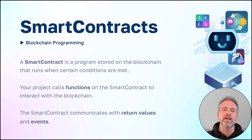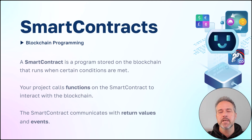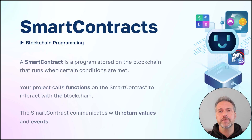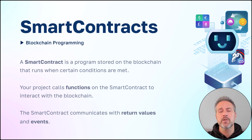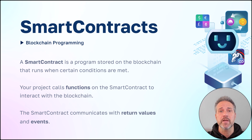A smart contract is a program that runs on the blockchain. It runs when certain conditions are met. Your project calls functions on the smart contract to interact with the blockchain, and the smart contract communicates back to your project using the return values from those functions, as well as events.